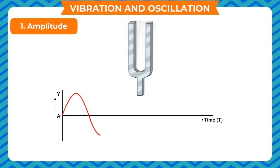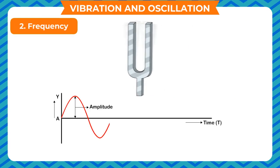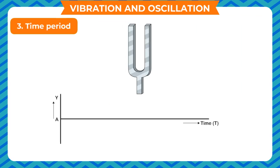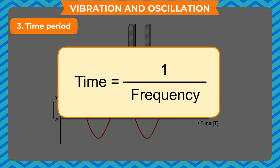Amplitude refers to the maximum distance moved by a body from its mean to extreme position. Frequency is the total number of vibrations taking place in one second, measured in Hertz. Time period refers to the time taken for one complete oscillation; it is equal to one upon frequency and is measured in seconds.